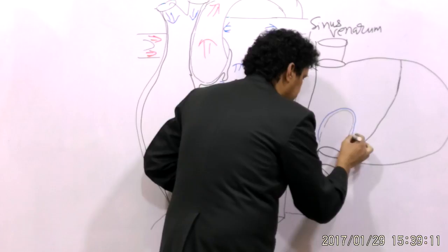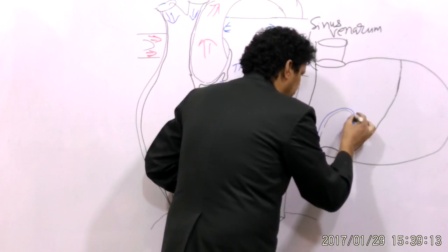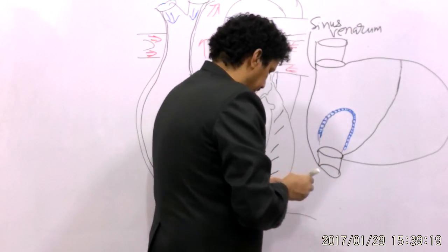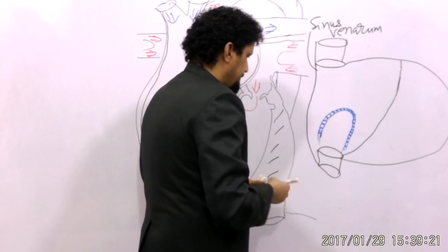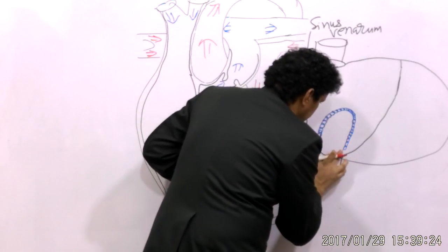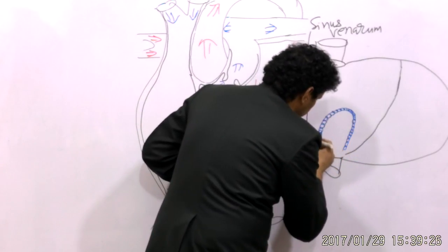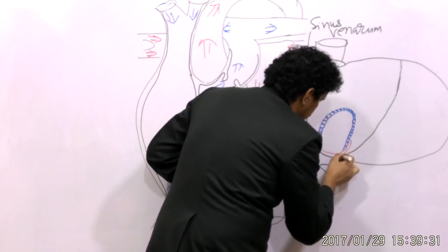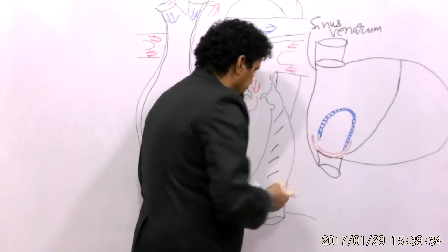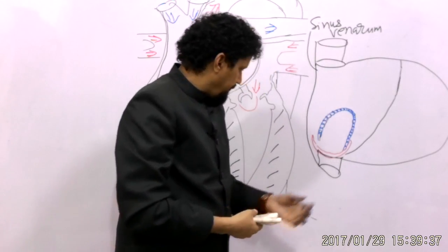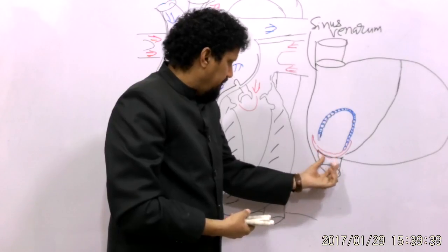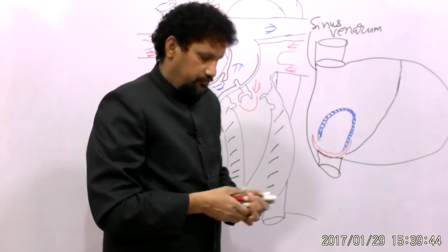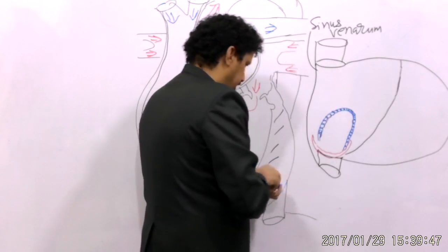The limbs develop from the septum secundum, and the floor develops from the septum primum. Here we can see the rudimentary valve of the inferior vena cava, which is moon-shaped. The valve of the inferior vena cava is also known as the Eustachian wall.